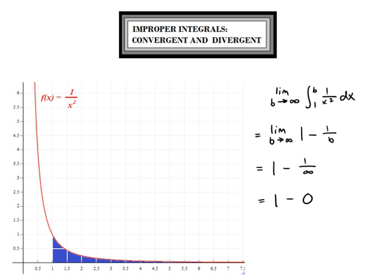If we extend the right bound of the definite integral off into infinity, it might seem reasonable that we will continue adding area forever and that the area should also be infinity. As we can see from this result, though, we get a number — the number 1. The area under the graph is equal to 1.